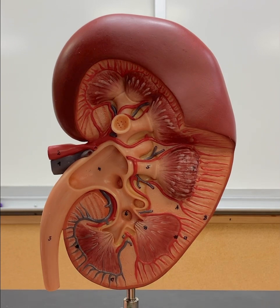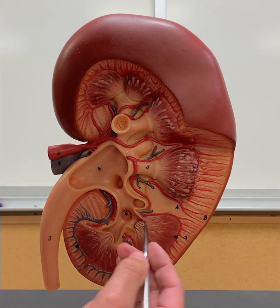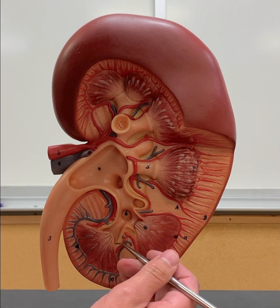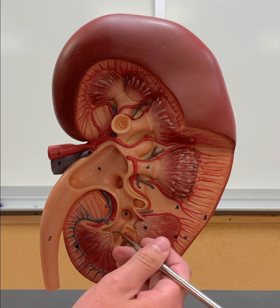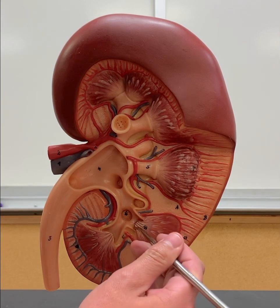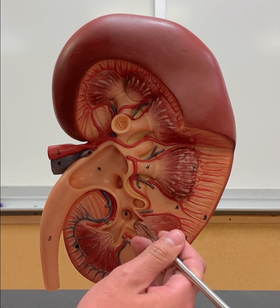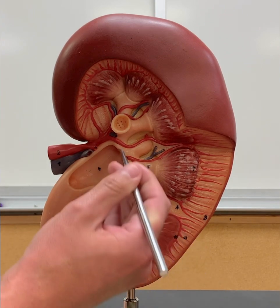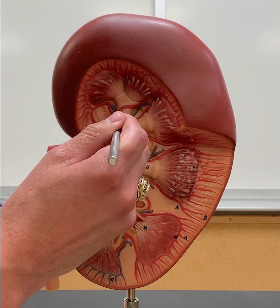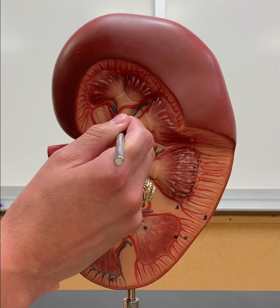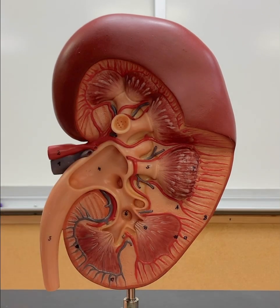The next thing we're going to go over is what's known as the renal papilla. The renal papilla is this part over here. Within the renal papilla, you can see all of these little pores. These pores are what's known as the papillary ducts.